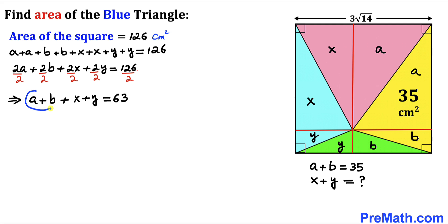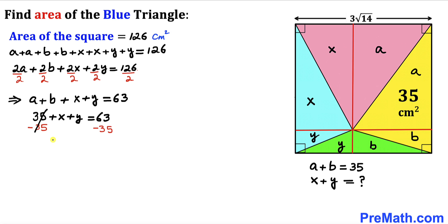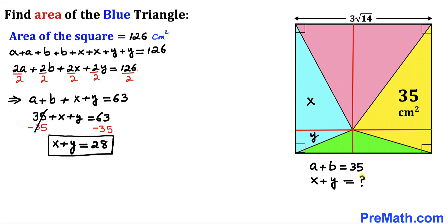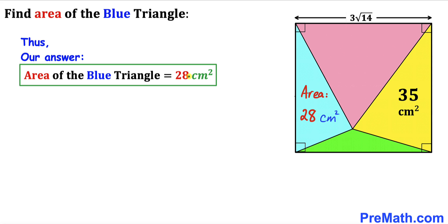We know that A + B = 35, so substituting: 35 + X + Y = 63. Subtracting 35 from both sides, X + Y = 28. So the area of the blue shaded triangle is 28 centimeter square. Thanks for watching, and please don't forget to subscribe to my channel for more exciting videos.